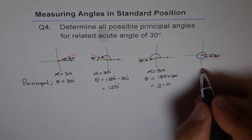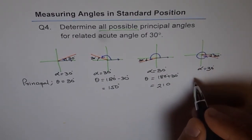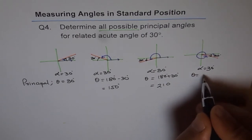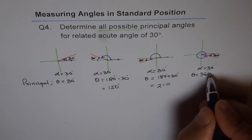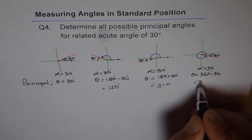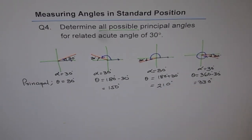And here alpha is 30 degrees — I am using alpha for the acute angle — and theta is 360 minus 30 degrees, which is 330 degrees. So these are the possible principal angles for the given related acute angle of 30 degrees: 30°, 150°, 210°, and 330°. Thank you.